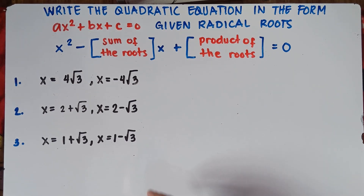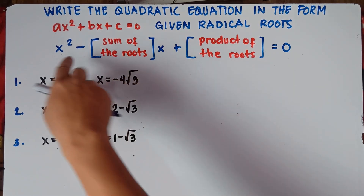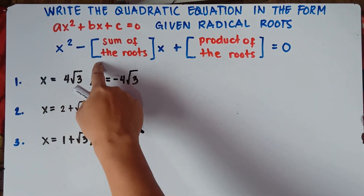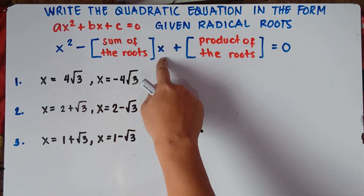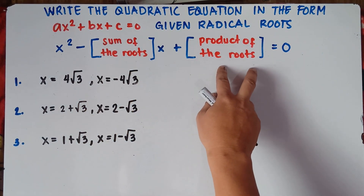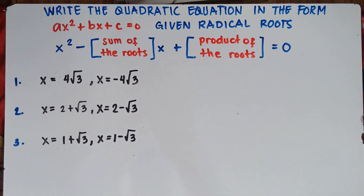So to get the equation, we will be using this format: x squared minus the sum of the roots times x plus the product of the roots equals 0. So let's start with number 1 for you to really understand this one.